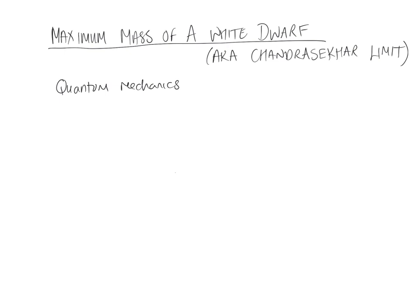In quantum mechanics there's the Heisenberg uncertainty principle: you can't know both the position and the momentum of a particle. The product of them can be known no better than h-bar over two.